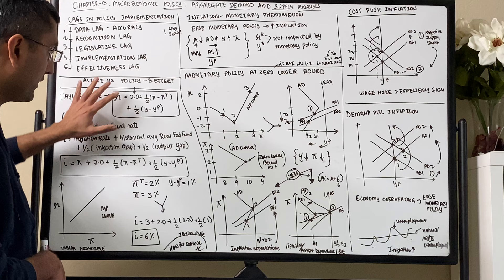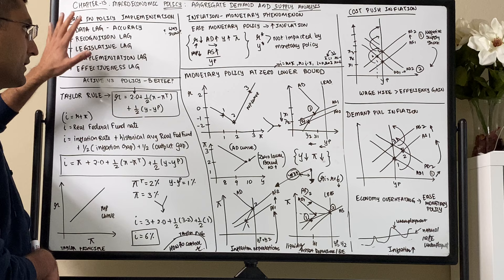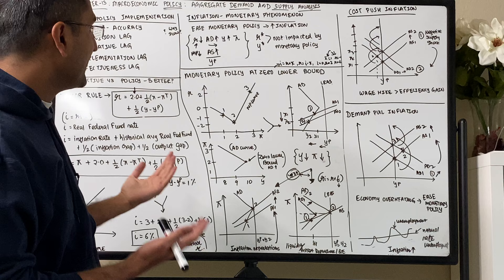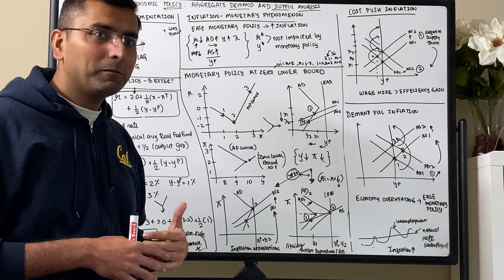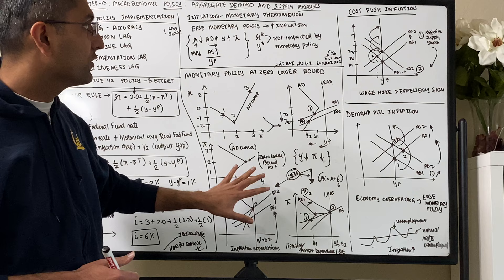We're going to learn two new things: first, whether active Federal Reserve policymaking is better or passive non-activist policy; and second, what happens when the interest rate hits zero — can monetary policy still do anything? For the last many years, the interest rate has been near zero, so we'll learn about what happens when it actually reaches zero.